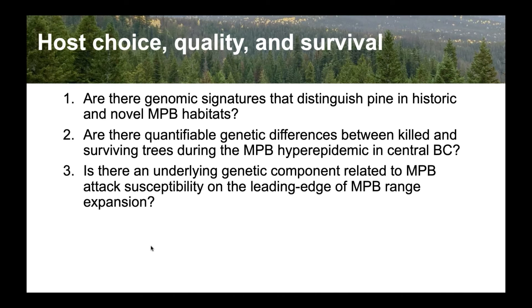Aims two and three address really similar issues, except aim two is during the hyper epidemic where beetles behave differently than on the leading edge, where you have a more endemic relationship with host choice and host seeking. So they're slightly different but complementary.